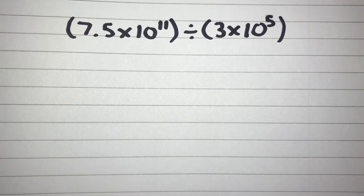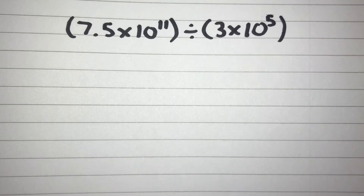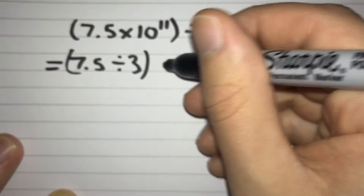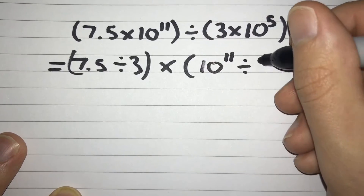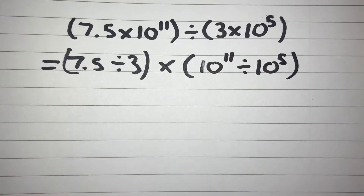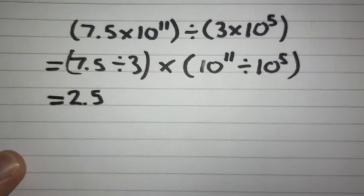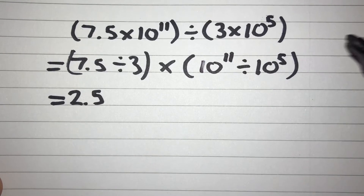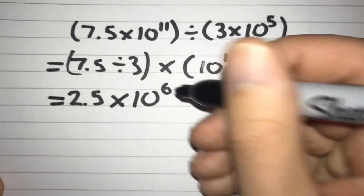Now let's look at another example. This time we have 7.5 times 10 to the power of 11 divided by 3 times 10 to the power of 5. Again, let's put our two numbers together: 7.5 divided by 3 multiplied by 10 to the power of 11 divided by 10 to the power of 5. So 7.5 divided by 3 gives us 2.5, and then 10 to the power of 11 divided by 10 to the power of 5 — we subtract our powers, so 11 take away 5 gives us 6, giving us 2.5 times 10 to the power of 6.